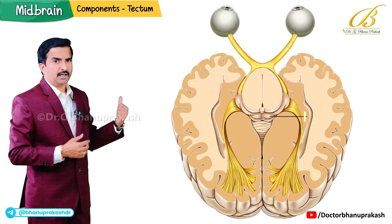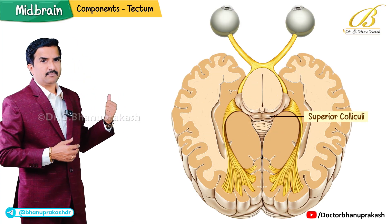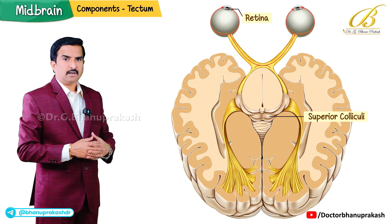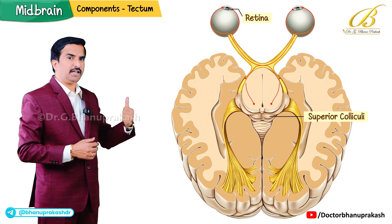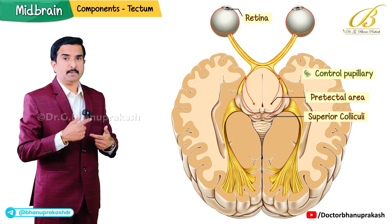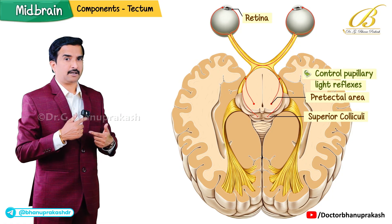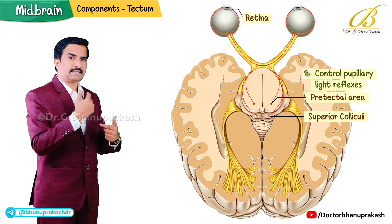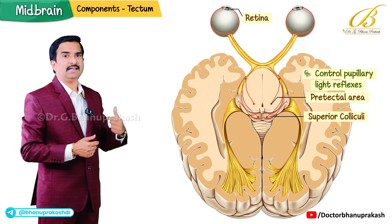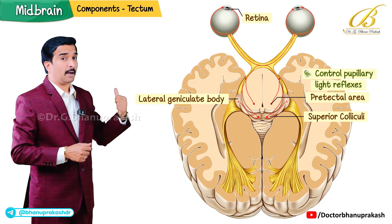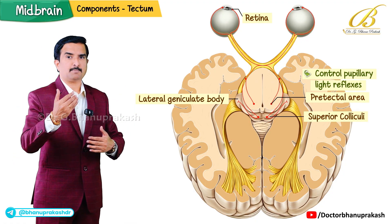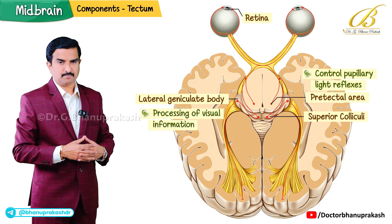The superior colliculi receive input from the retina of the eye and the pre-tectal area, which is involved in controlling pupillary light reflexes, and then send projections to the lateral geniculate bodies, a part of the thalamus, for further processing of visual information.